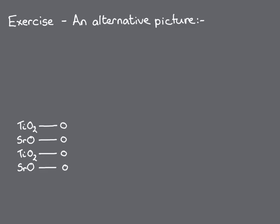The exercise for this module explores an alternative picture for the conducting interface between LAO and STO, which considers the individual layers of atoms within the perovskite structure. Along a cubic 100 direction, the layers alternate between AO and BO2 combinations of ions.